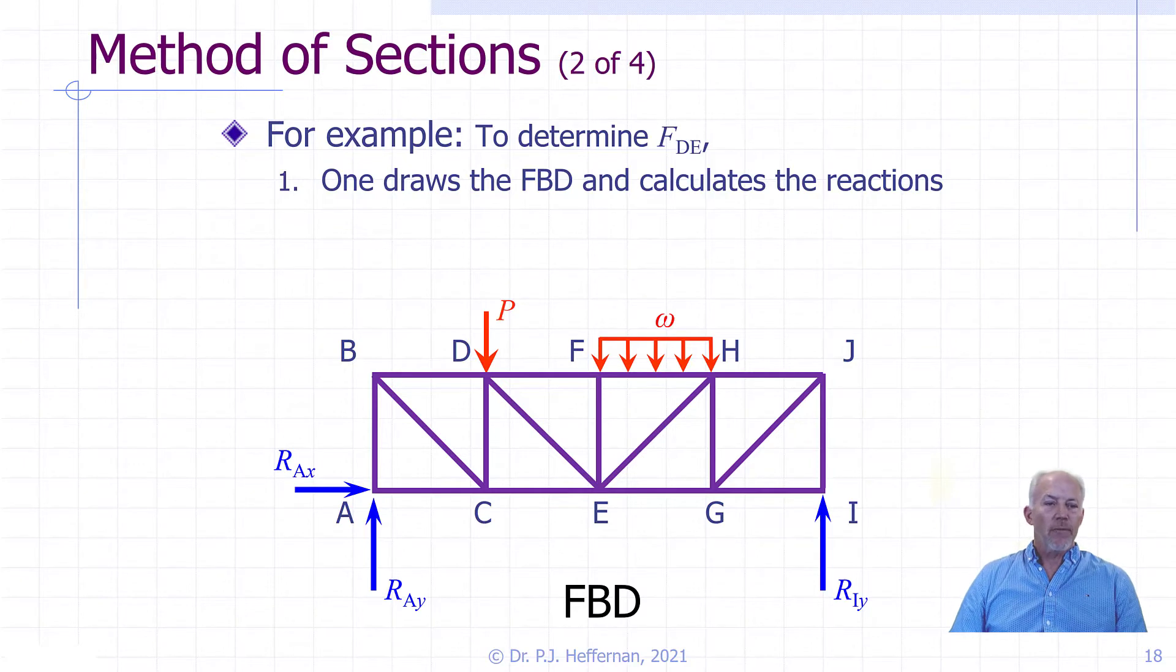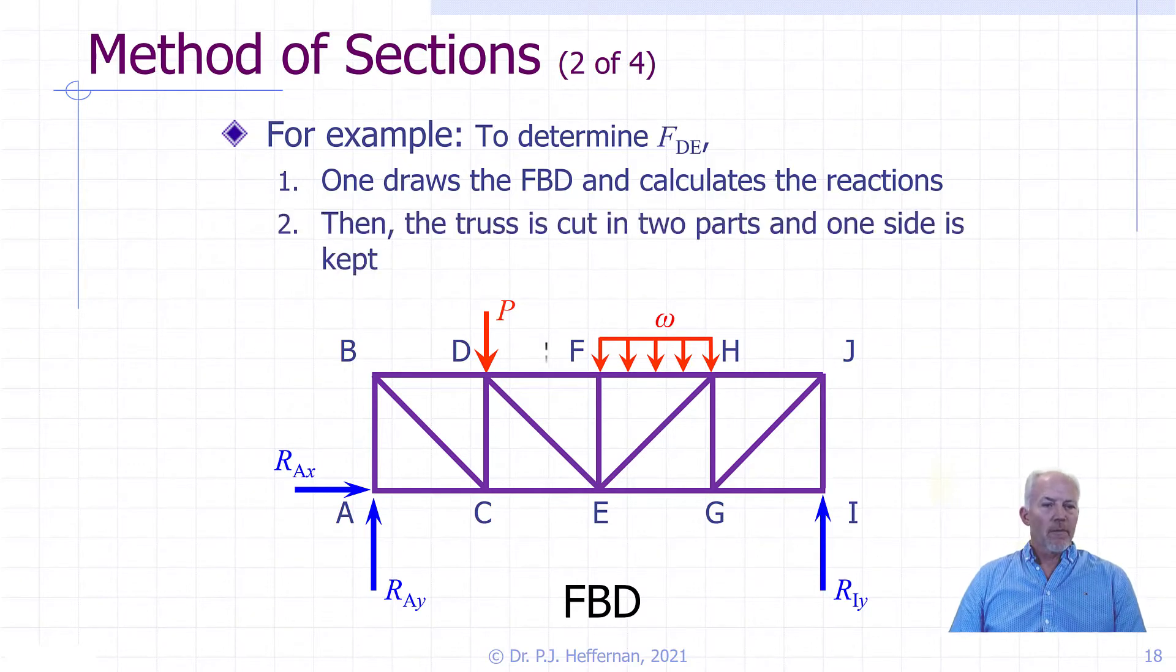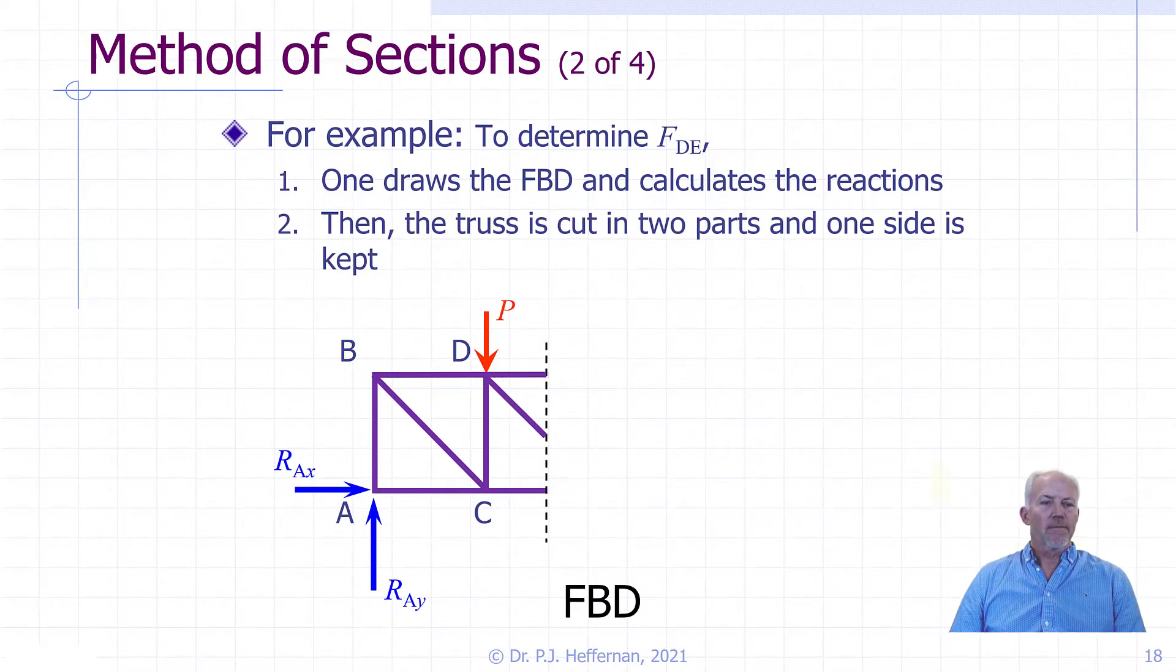Once we have determined the reactions, we can do our method of sections. We will draw our cutting plane through the truss. Be sure to include the member of interest in the cutting plane. It is convenient to imagine our cutting plane just past the plane DC or just before the plane FE. This makes it easier when determining perpendicular distances when calculating moments. It makes no difference to the members that are cut because the axial forces are running uniaxial to the members' orientation.